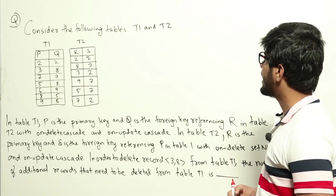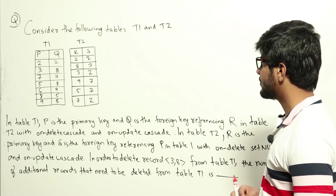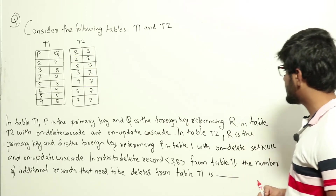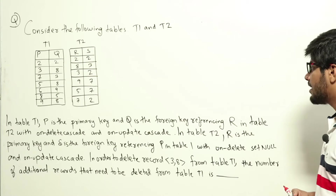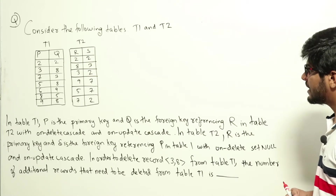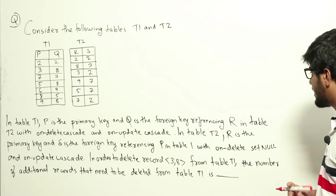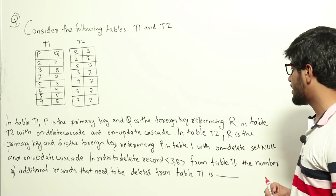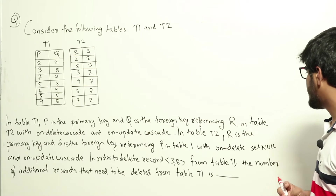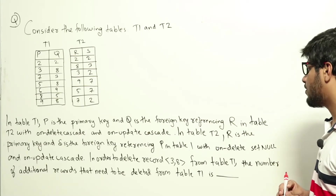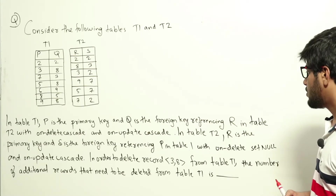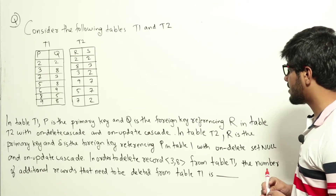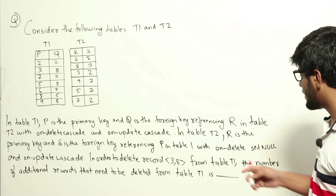Consider the following tables T1 and T2. In table T1, P is the primary key and Q is the foreign key referencing R in table T2 with ON DELETE CASCADE and ON UPDATE CASCADE. In table T2, R is the primary key and S is the foreign key referencing P in table T1 with ON DELETE SET NULL and ON UPDATE CASCADE. In order to delete the record (3,8) from table T1, the number of additional records that need to be deleted from table T1 is?